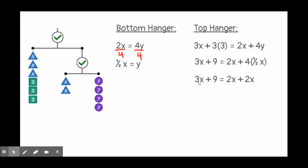So now I have the equation 3x plus 9 equals 2x plus 2x. Combining like terms on the right-hand side, I get 3x plus 9 equals 4x.